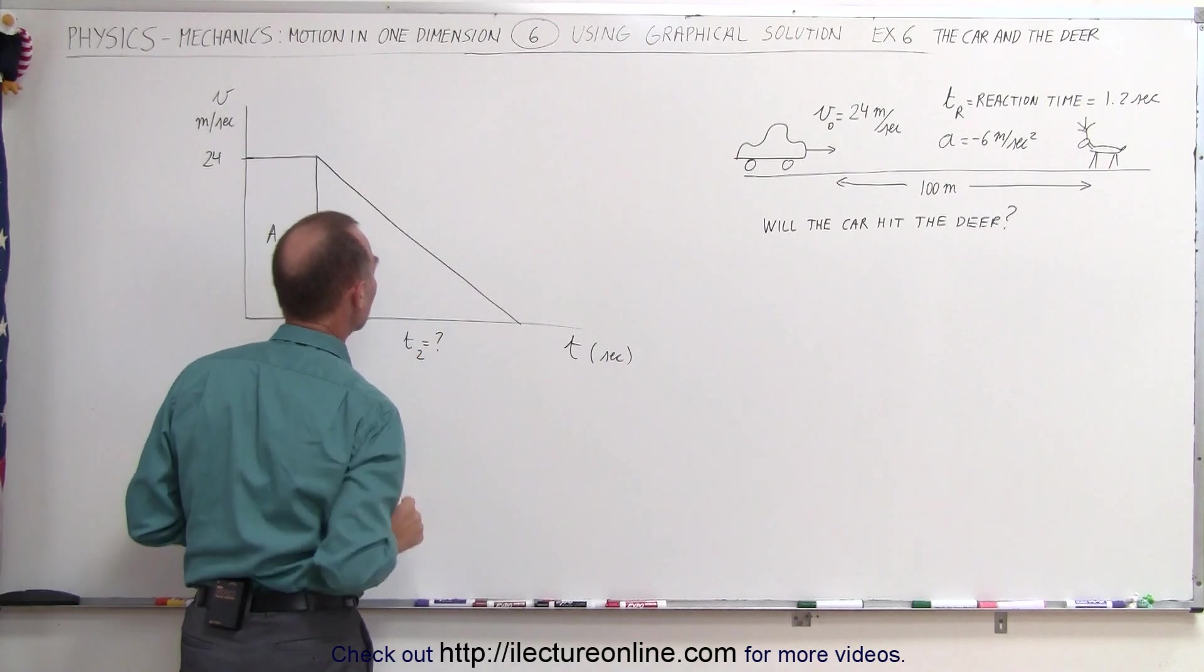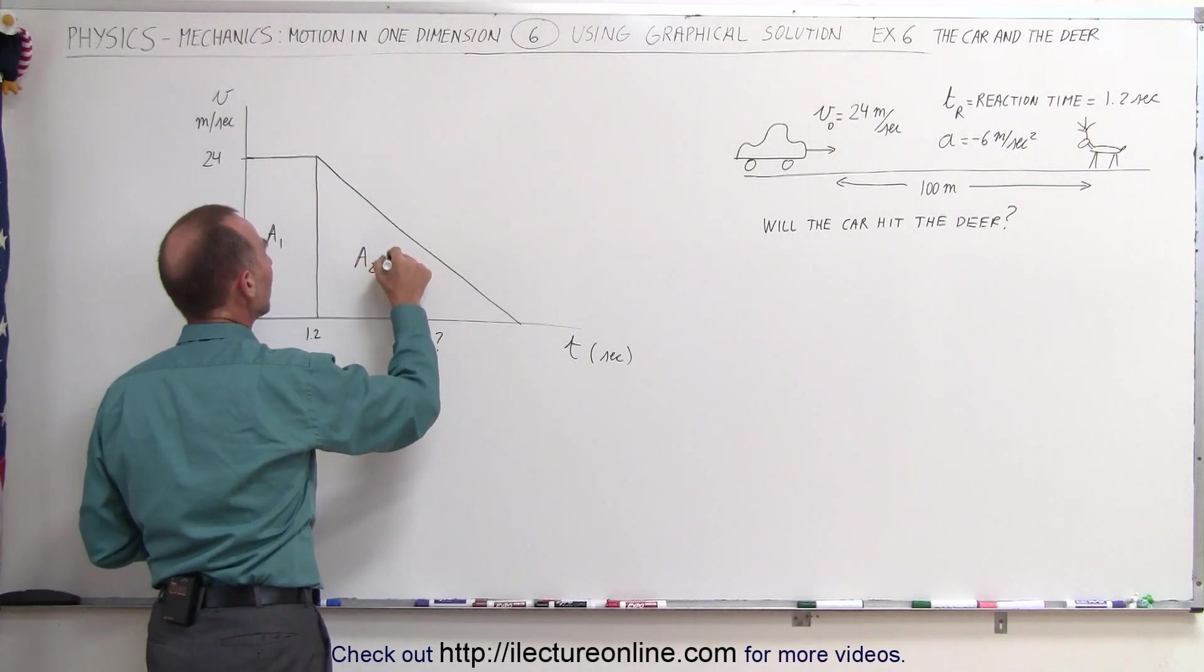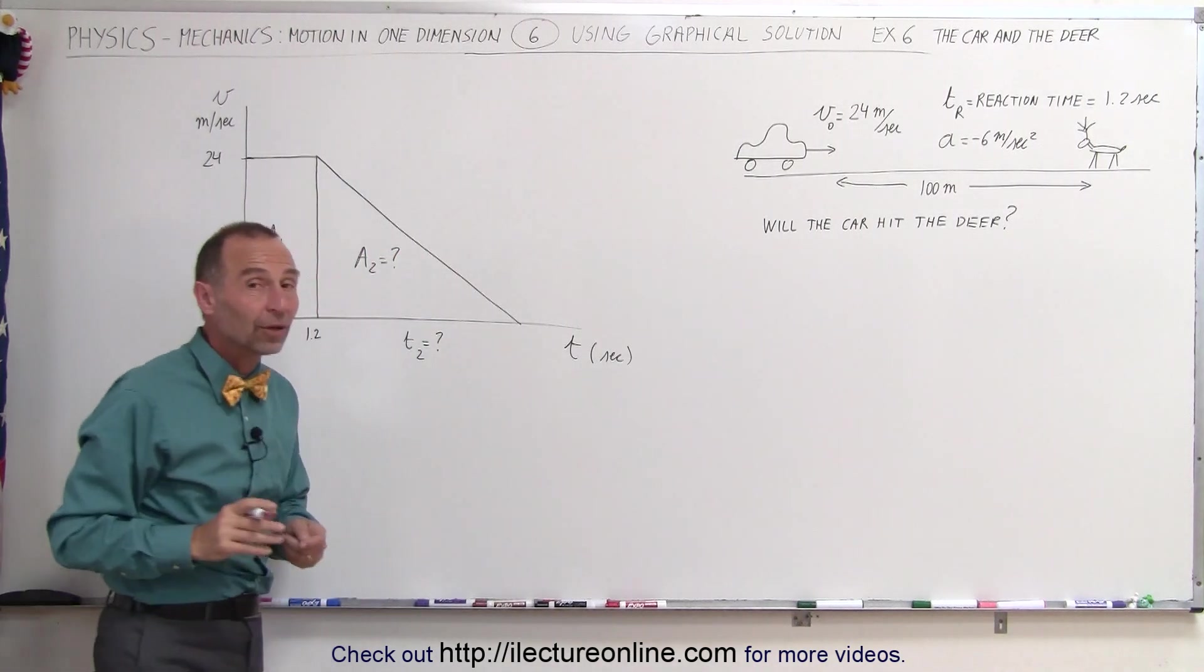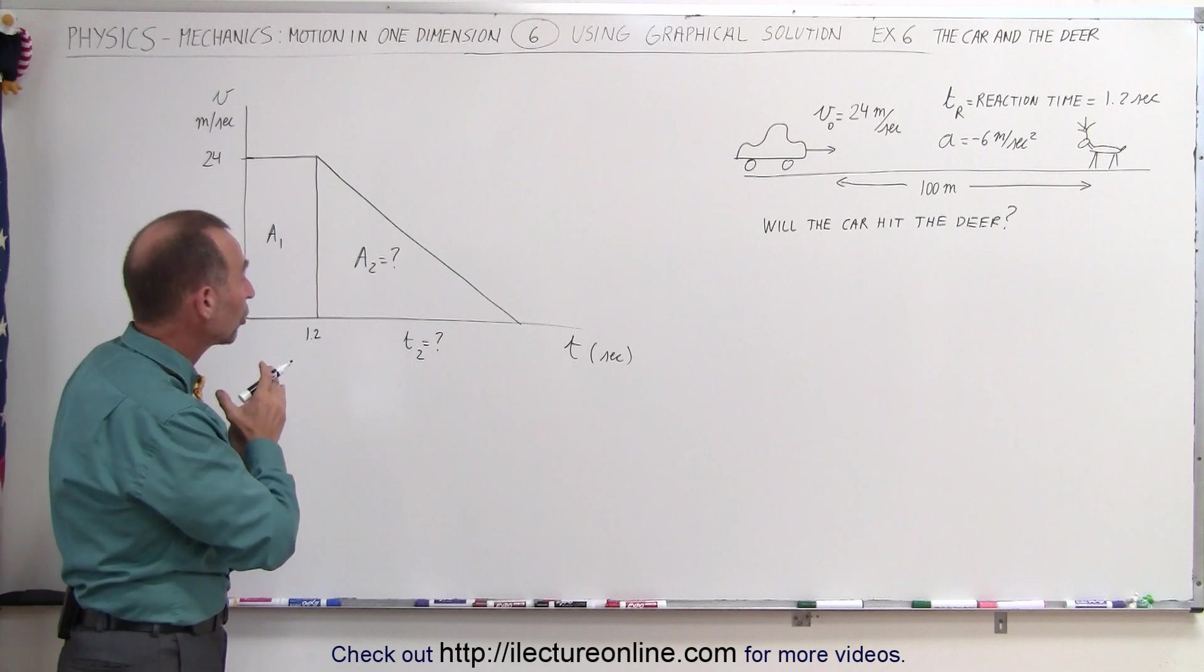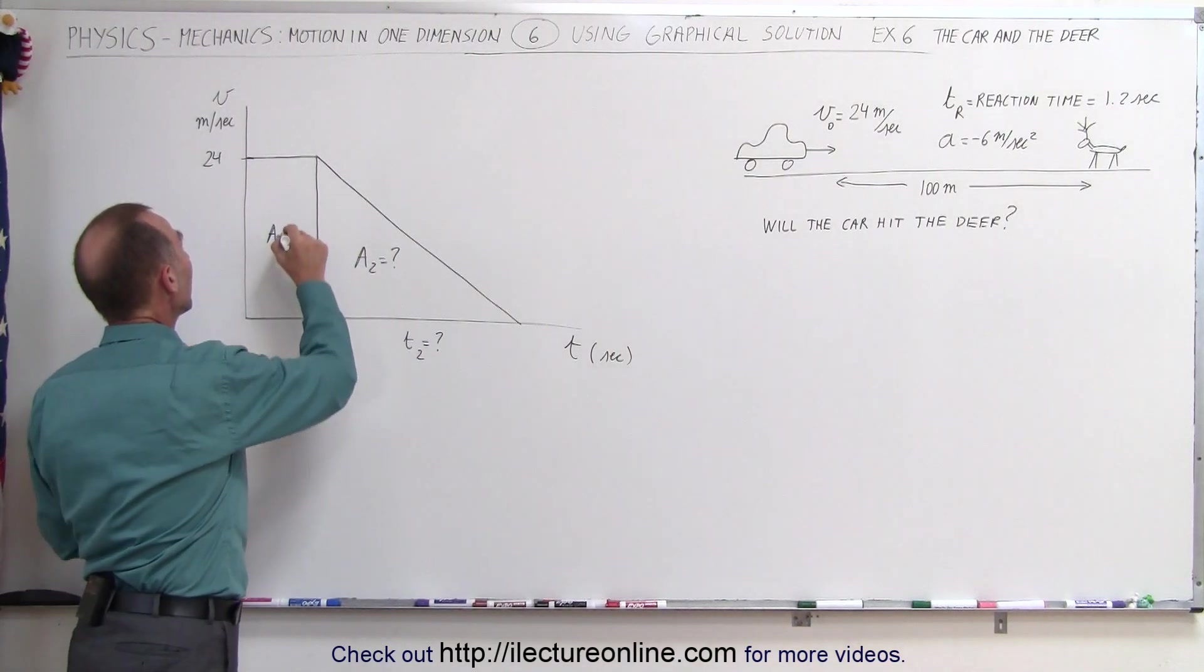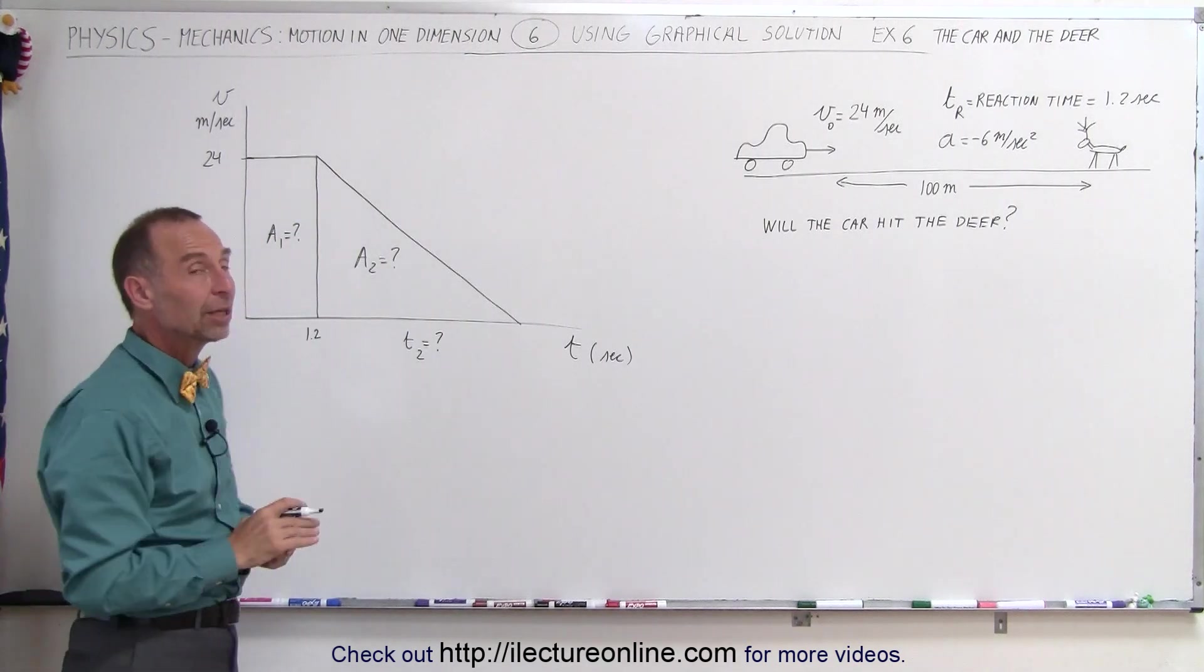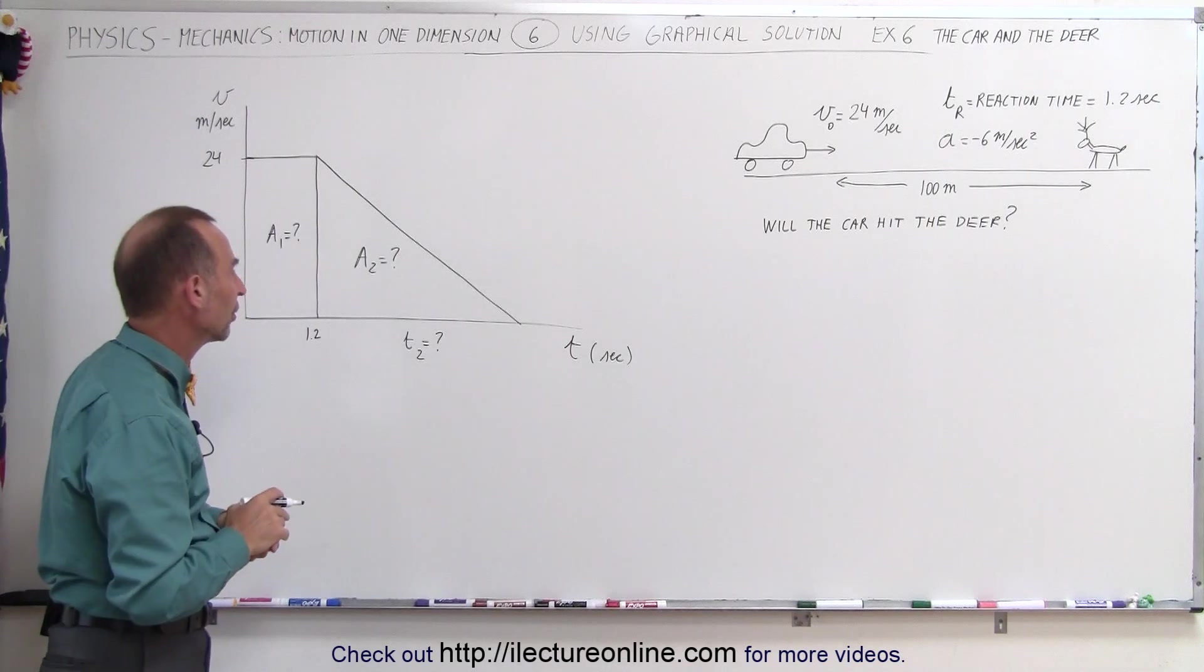We do not know what t2 is and we also do not know what a2 is—that's the whole question. We want to see what is a1 equal to and what is a2 equal to. Together, a1 plus a2 should be less than 100 meters or the car will hit the deer.